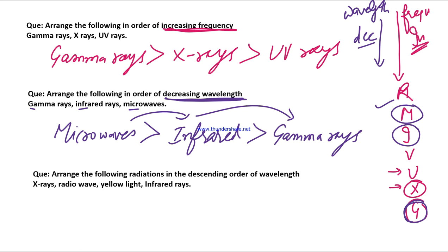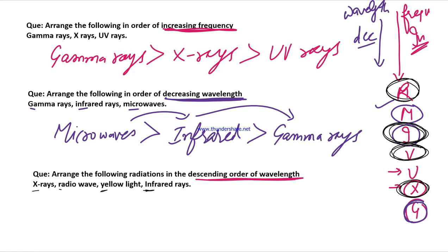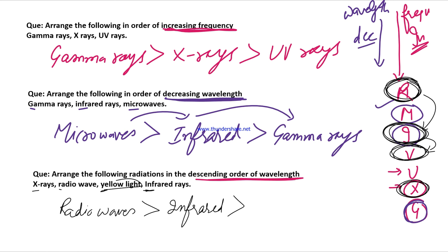Next question: Arrange the following radiations in decreasing order of wavelength — given are X-rays, radio waves, yellow light (visible light), and infrared rays. Decreasing wavelength means from largest to smallest. So the answer is: Radio waves (largest wavelength), then Infrared rays, then Visible light (yellow light), then X-rays (smallest wavelength among the given). So the decreasing order of wavelength is: Radio waves > Infrared rays > Visible light > X-rays. Done.